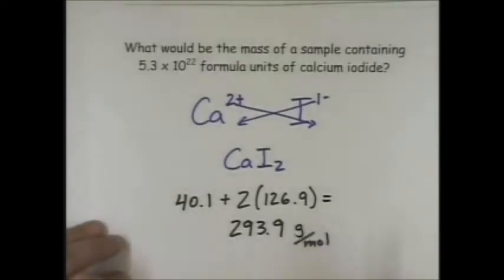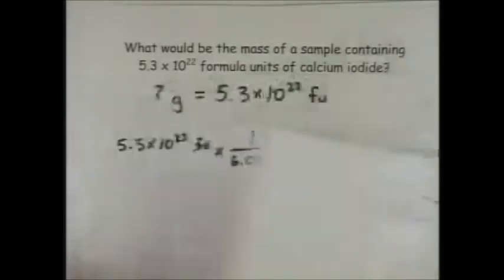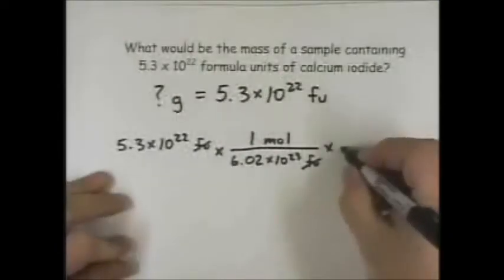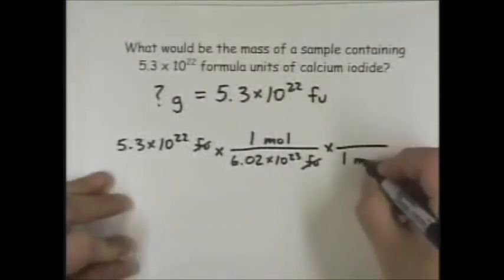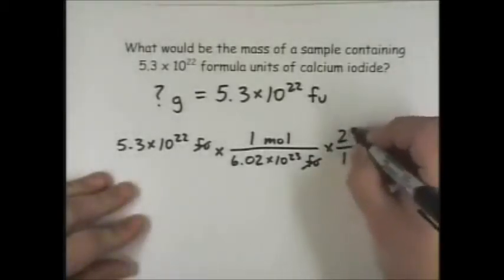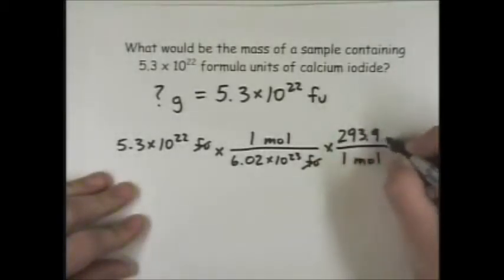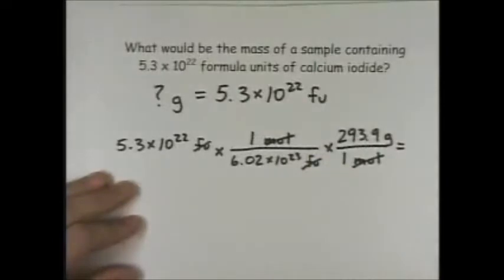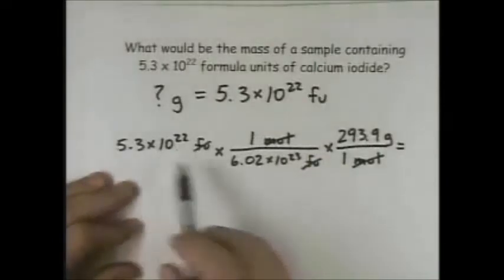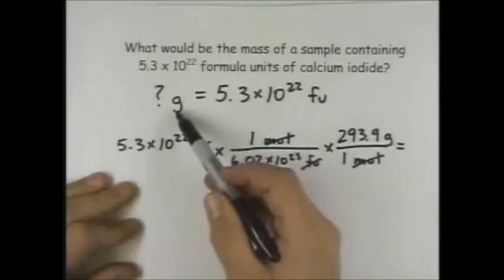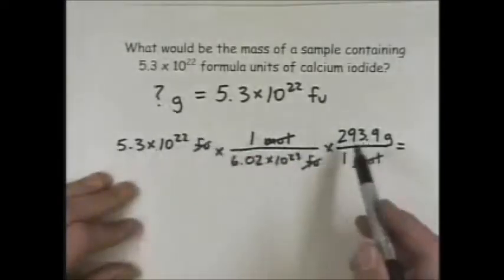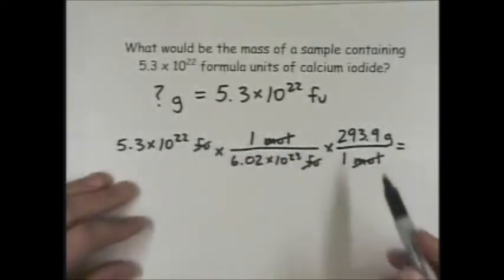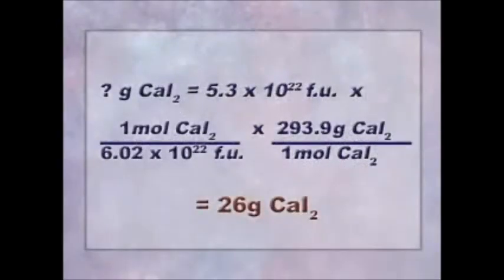If we're using grams and moles, the units of the problem tell us that 1 mole goes on the bottom and 293.9 grams goes on top. The moles cancel and we're left with grams on the top. We're ready to multiply across the top and divide by everything on the bottom. This gives us an answer of 26 grams of calcium iodide. Just remember, if you let the units guide you, all these problems are really the same.